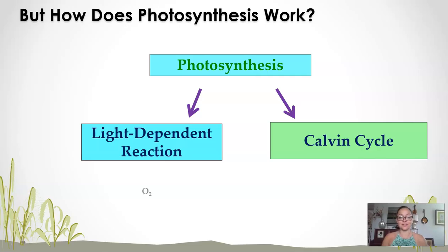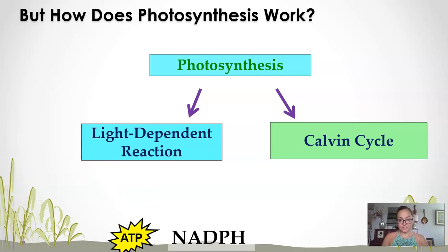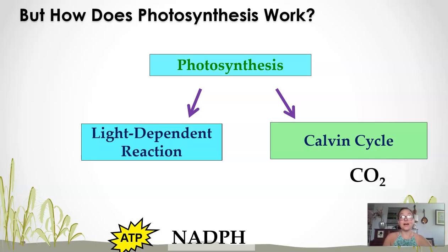When we looked at the light reaction in my previous video, we saw that oxygen was a waste product — it was produced in the light reaction — but ATP and NADPH were the main products of the light reaction. This is where the idea of photosynthesis being an anabolic pathway comes into play.